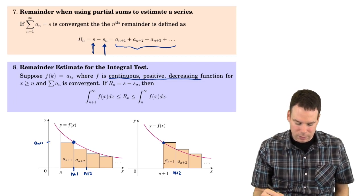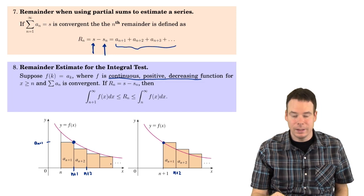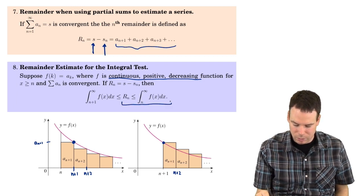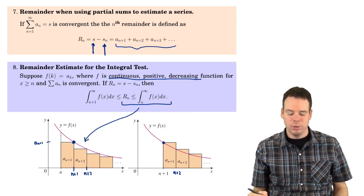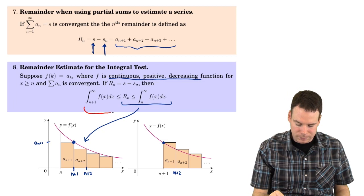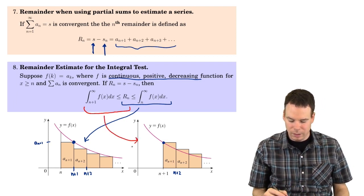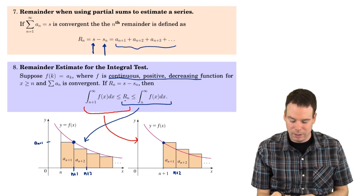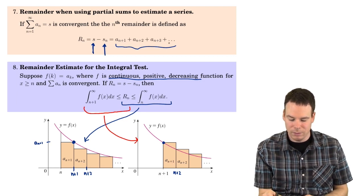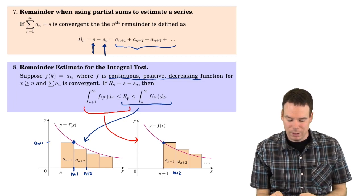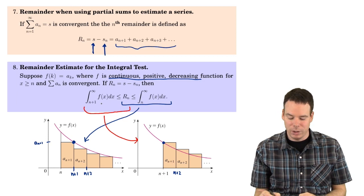From these diagrams I can conclude that the sum of the areas of the rectangles — the tail end of the series — has to be smaller than the area under the curve from n to infinity. In the other diagram, the area under the curve is smaller than the area of the rectangles because I've chosen my rectangle to overlap the region under the curve. So I get bounds on my remainder term: it's smaller than one integral and bigger than another, and we can work out the values of those integrals.